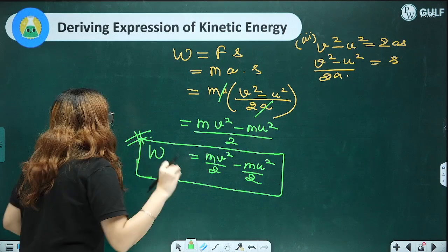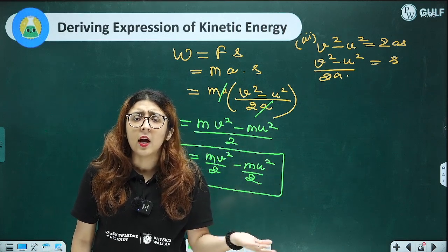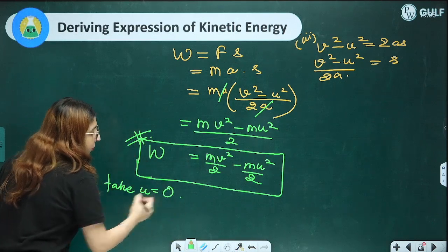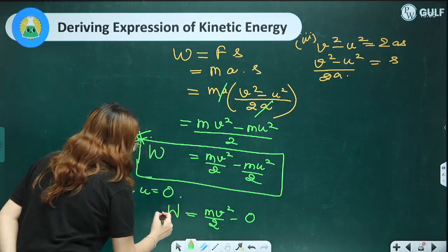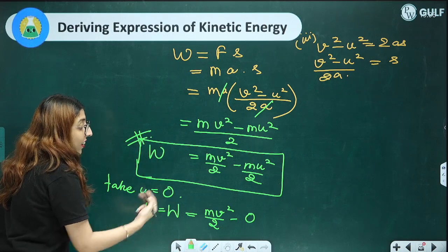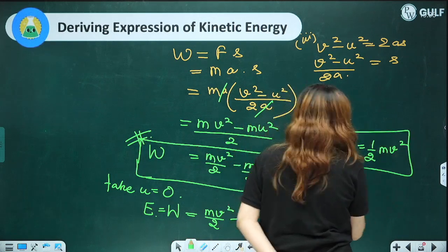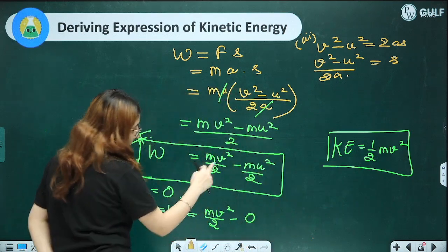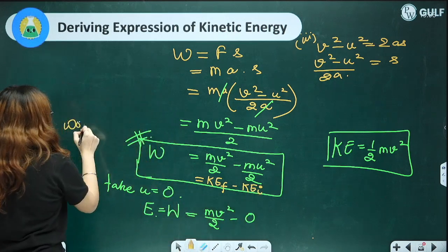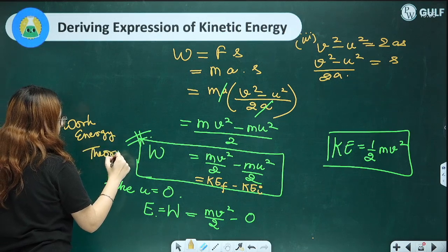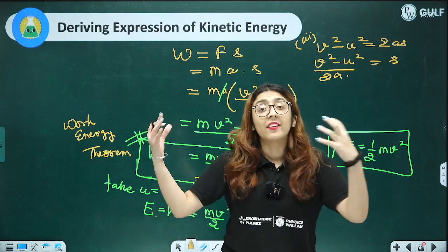For kinetic energy, we are concerned with a body that is moving, so take initial velocity u = 0. The term ½mu² becomes 0, leaving: KE = ½mv². This is the formula for kinetic energy. The full expression Work = ½mv²(final) − ½mv²(initial) is the work-energy theorem.